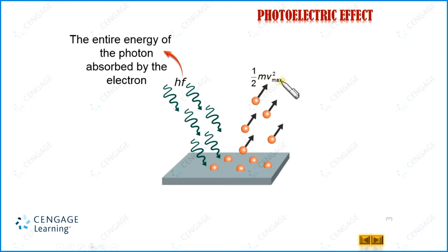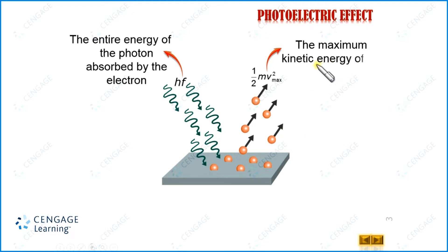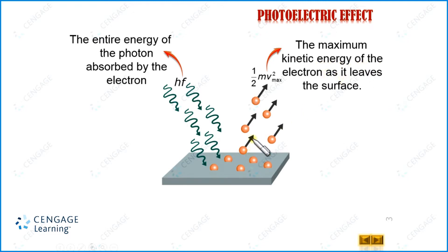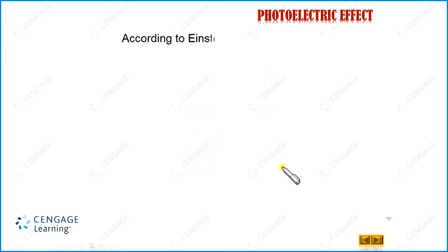We are writing V_max for the maximum velocity, and (1/2)mv²_max is the maximum kinetic energy of the electron as it leaves the surface. This is the process of photoelectric emission. Now let us come to the Einstein photoelectric equation. The Einstein photoelectric equation is an energy conservation equation.